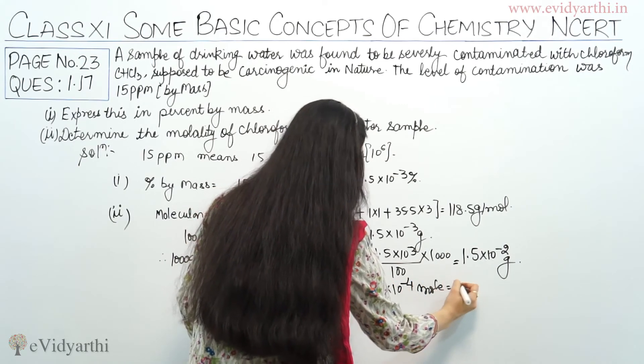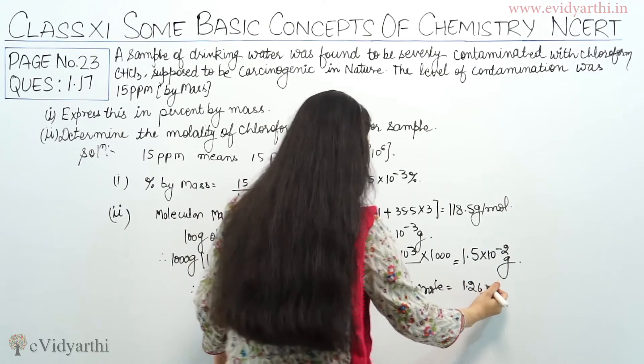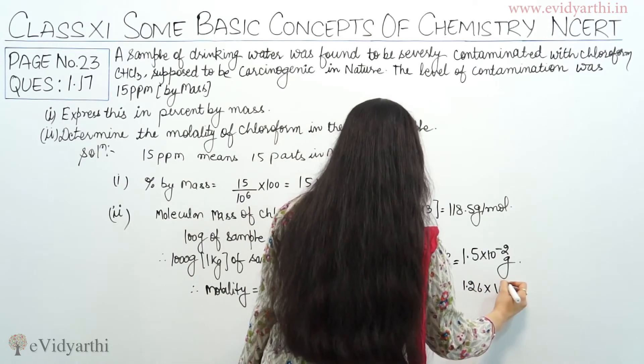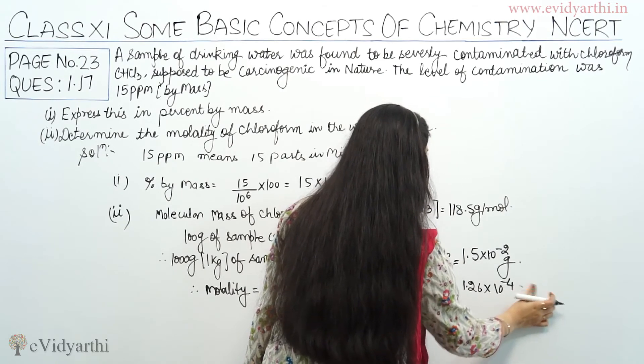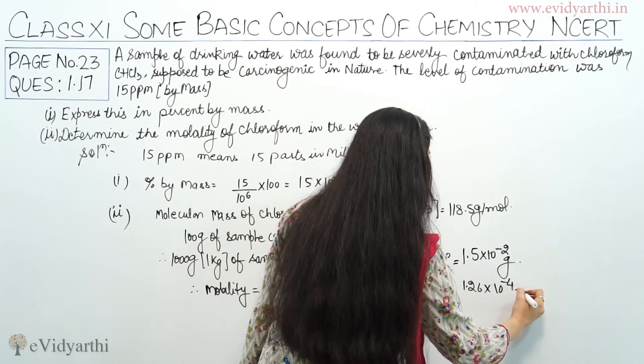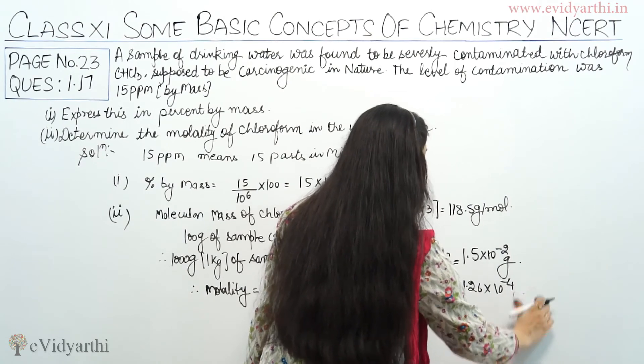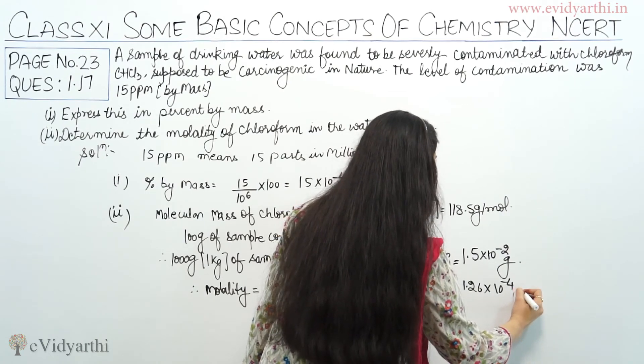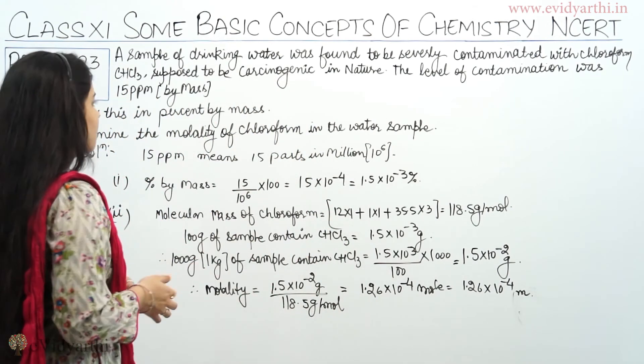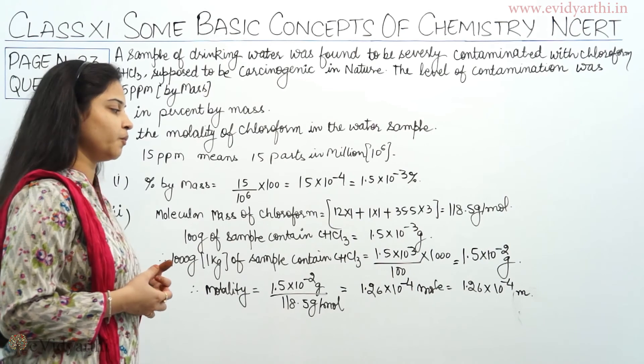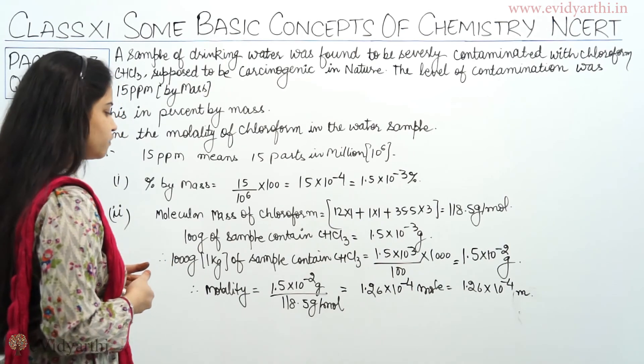Or 1.26 into 10 raised to power minus 4 molal. So this is the molality of chloroform in the water sample, 1.26 into 10 raised to power minus 4 molal.